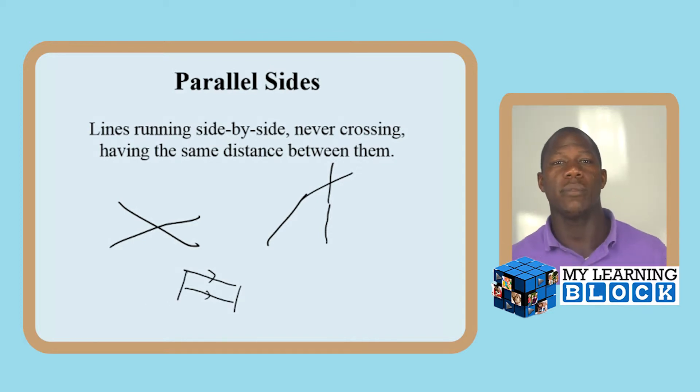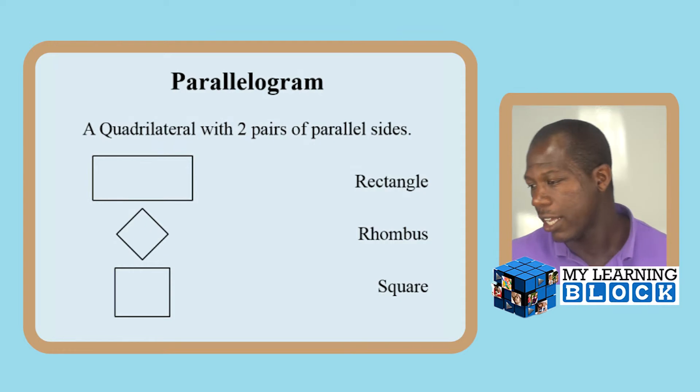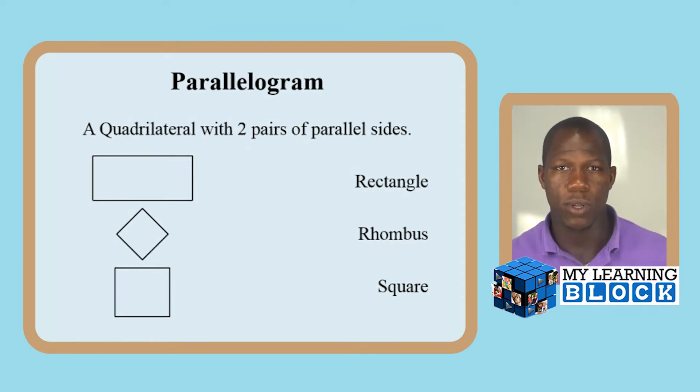Now brings us to our next thing about parallelograms. What are parallelograms? Parallelograms in themselves can be classified by three of the basics that we're going to talk about here. A rectangle is a parallelogram, a rhombus is a parallelogram, and a square is a parallelogram.